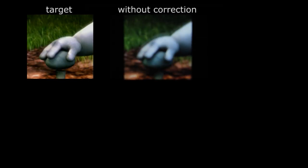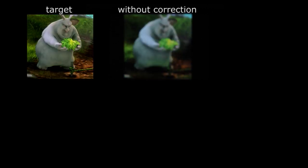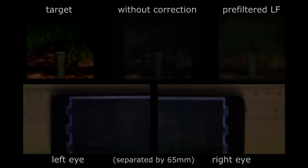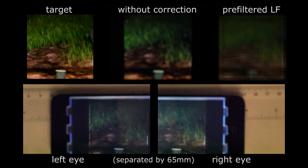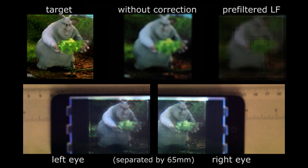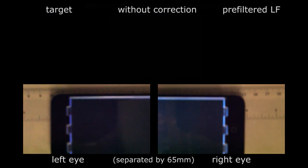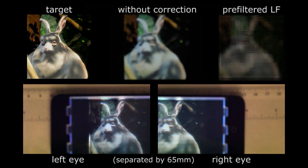We see the target video and the capture video without correction on a conventional display. With the pre-filtered light field video on top right, the captured images are much sharper, as shown on the bottom, and the optimization allows two eyes separated by a 65mm distance.